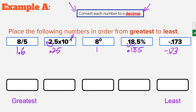Now that all our numbers are in decimal form, it's time to put them in order from greatest to least. Before we start, there's already one number we know is absolutely the smallest — it's the only negative number. A negative number is always smaller than a positive number, so negative 1.73 goes in the least spot. Looking for the largest number: 1.6 is more than 1, 0.25, and 0.185, so 1.6 is our greatest.